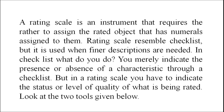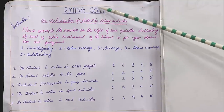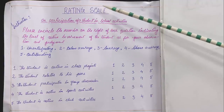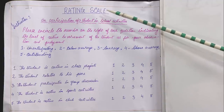A rating scale resembles a checklist but it is not a checklist. It is to be used when finer descriptions are needed. In a checklist, you merely indicate the presence or absence of a characteristic. But in a rating scale, you have to indicate the status or level of quality of what is being rated. Now, what differences do you observe between this chart and the previous one? In what way does a rating scale give a more qualitative description of students' behavior?